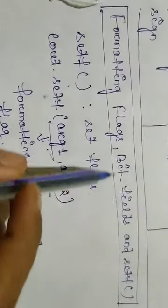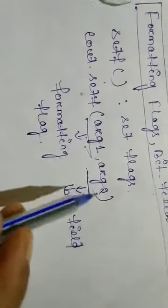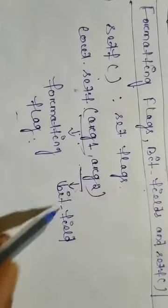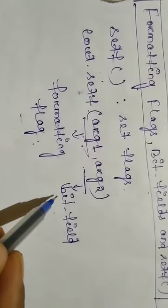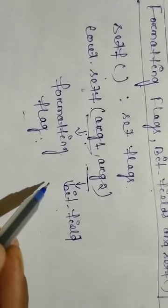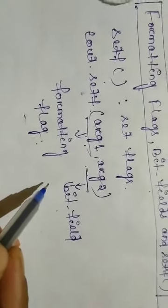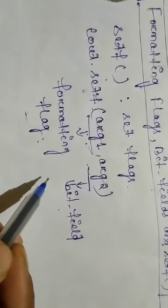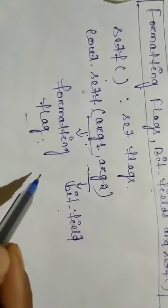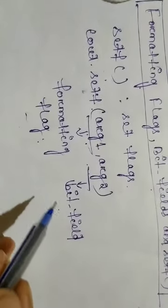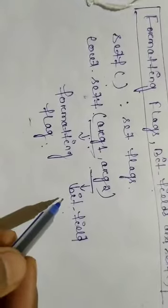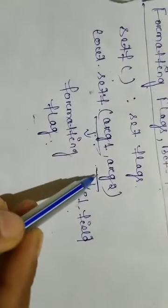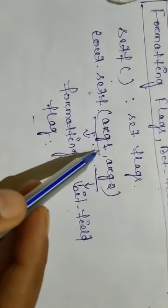So now you understand formatting flags, bit fields, and setf. Setf is the function; argument one is the formatting flag and argument two is the bit field. The bit field basically specifies the group of variables to which the formatting flag belongs. For example, if it is left justified then the bit field is adjustfield, and if it is decimal base or octal base then the bit field is basefield. You must remember that argument one should be one of the group members of argument two.